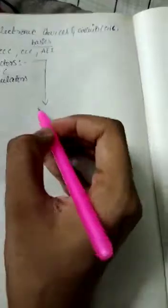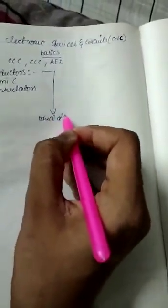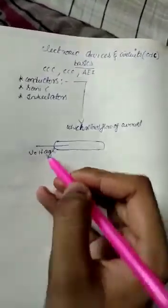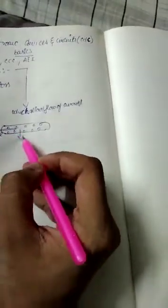Conductors are materials which allow the flow of current. Their resistance factor is very low. If we need current to flow through a conductor, we need to apply a voltage. There are electrons in conductors, and when a potential is applied, electron mobility creates current flow.